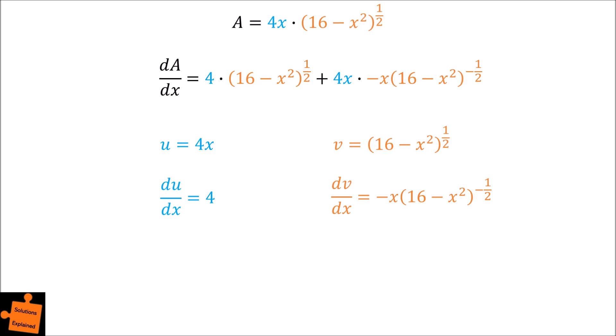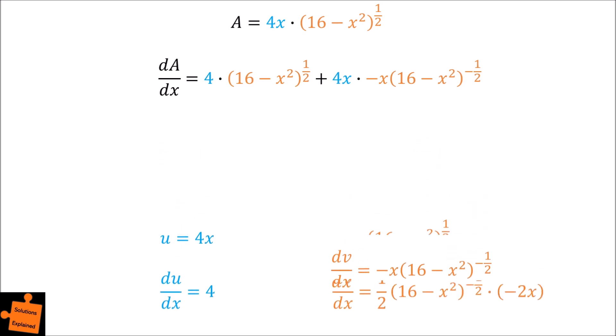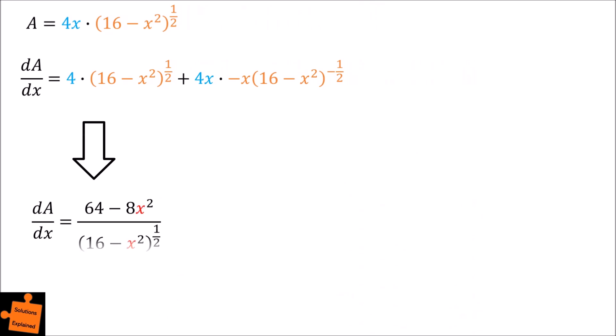If we run through the maths and simplify this equation, we obtain that dA by dx is equal to 64 minus 8x squared, all over the square root of 16 minus x squared.